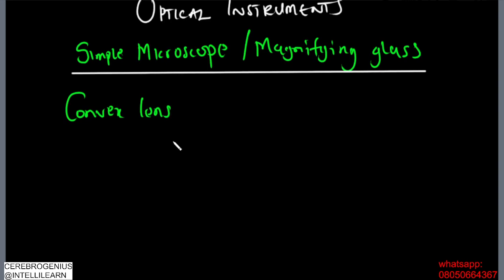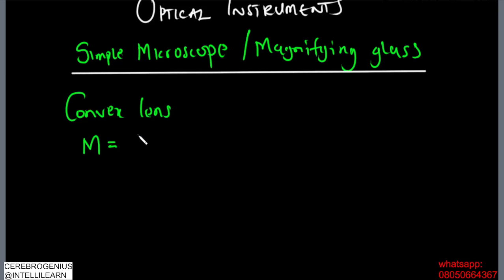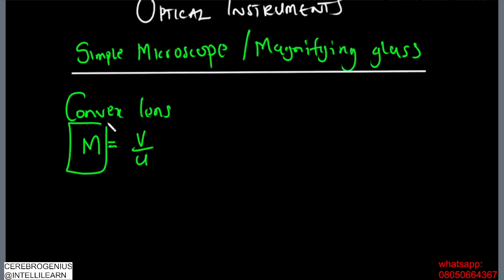Something very important: for a convex lens to form a very magnified image, where do we place the object? From the previous ray diagrams, we saw that as the object moves closer to the lens, the magnification increases. So the closer the object is to the lens, the more magnification we get, because magnification is v over u — it is inversely proportional to the object distance.